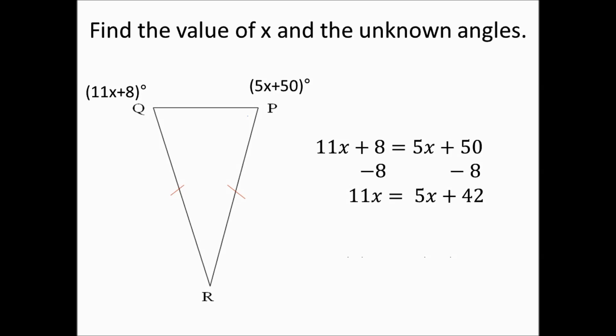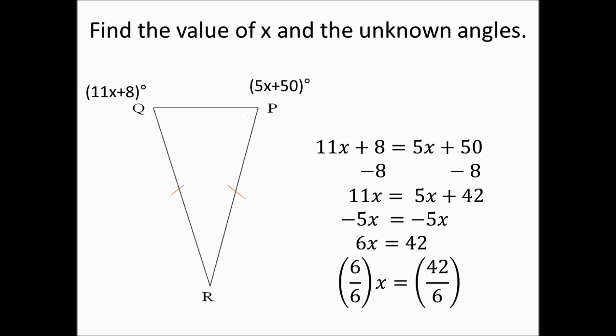The next step is to subtract 5X from both sides: 11X minus 5X gives us 6X, which equals 42. Then we divide both sides by 6: 6X divided by 6 equals 42 divided by 6, which gives us X equals 7.